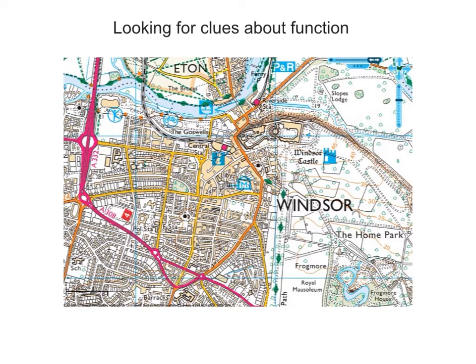Now let us take a look at a map to see if we can find clues about the function of a place. I have chosen Windsor here, partly because there are a number of blue symbols. Blue symbols represent tourism, so we can assume that Windsor has a function of tourism.